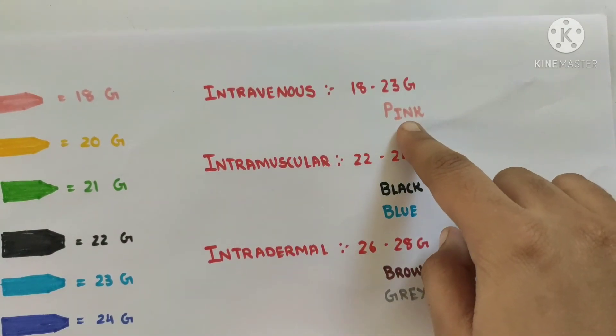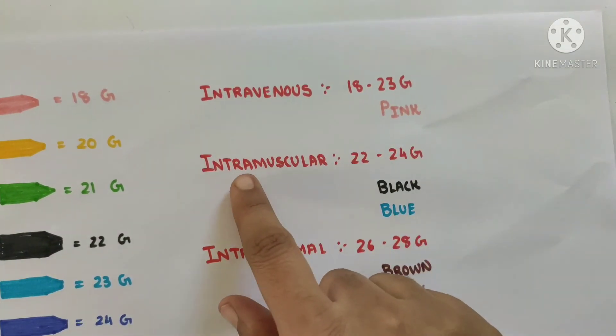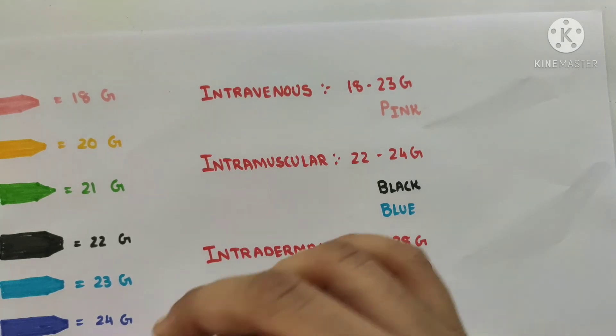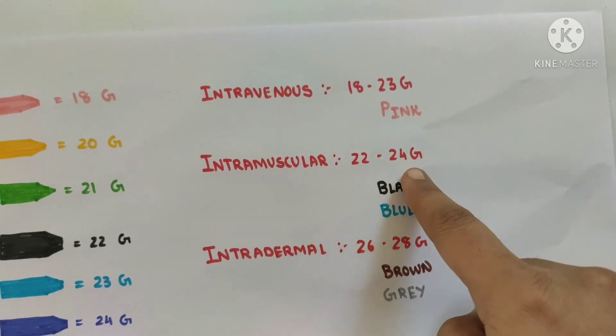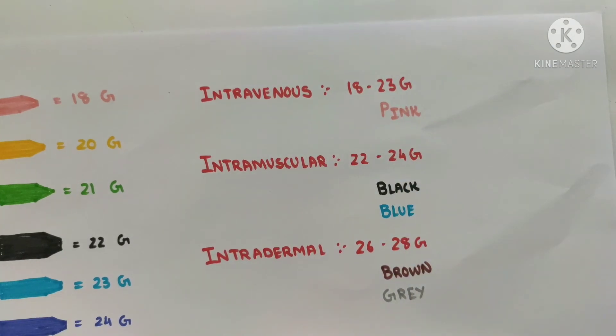From intramuscular we can give 1 to 5 ml of drug, hence it will be having lesser diameter than that of intravenous. So gauge will be bigger, that is 22 to 24 gauge. Hence we will use the hub with black color or blue color.